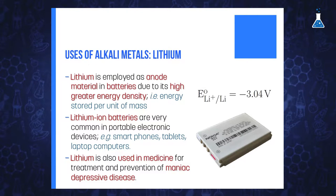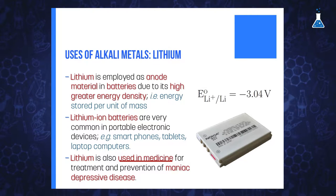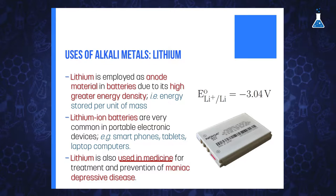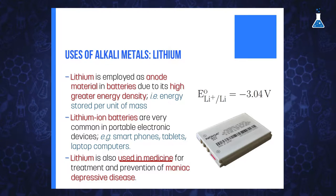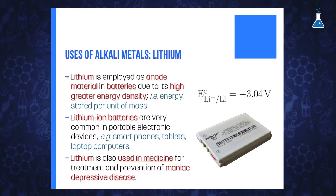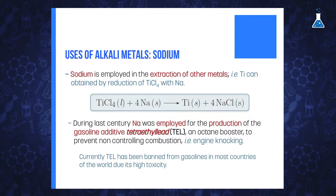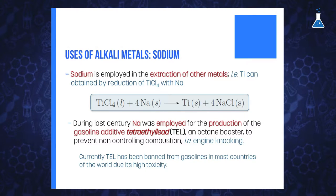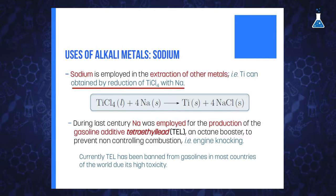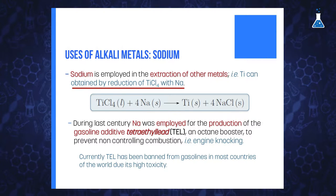Other uses of lithium include medicine, for the treatment and prevention of manic depressive disease, and it is especially effective for patients whose manic depression is genetic. In the case of sodium, apart from its use in soaps, it is mainly employed for production of other metals — for example, titanium, which can be obtained by reducing titanium tetrachloride with sodium metal.